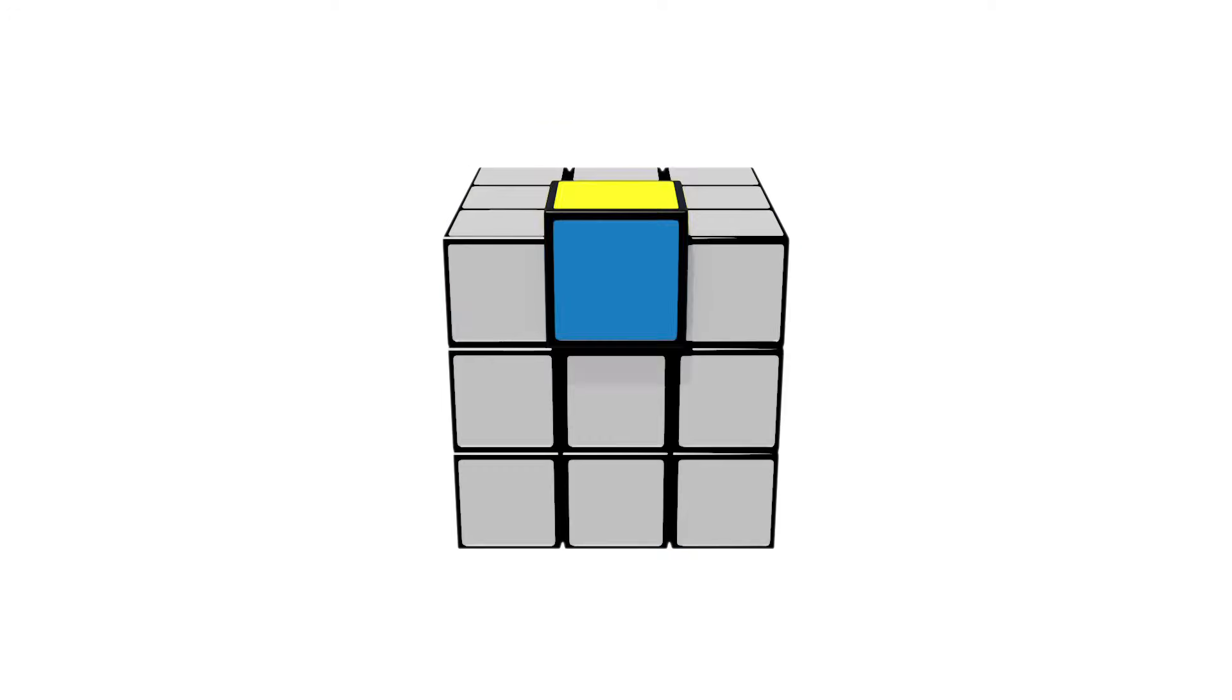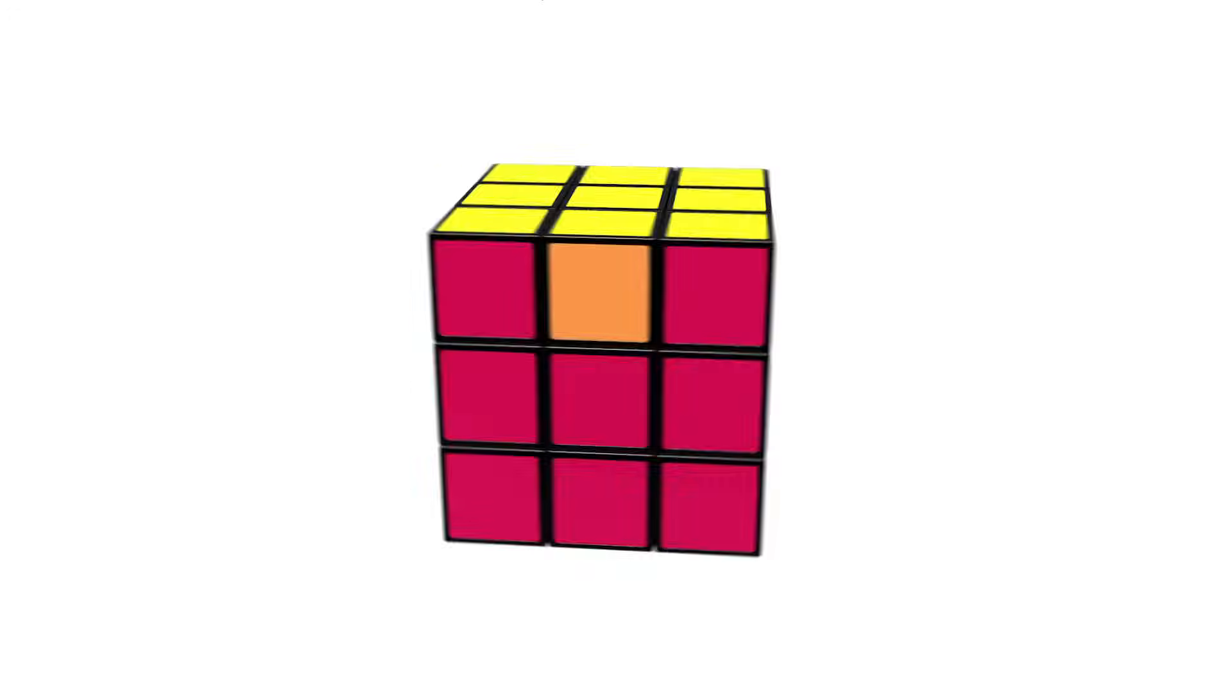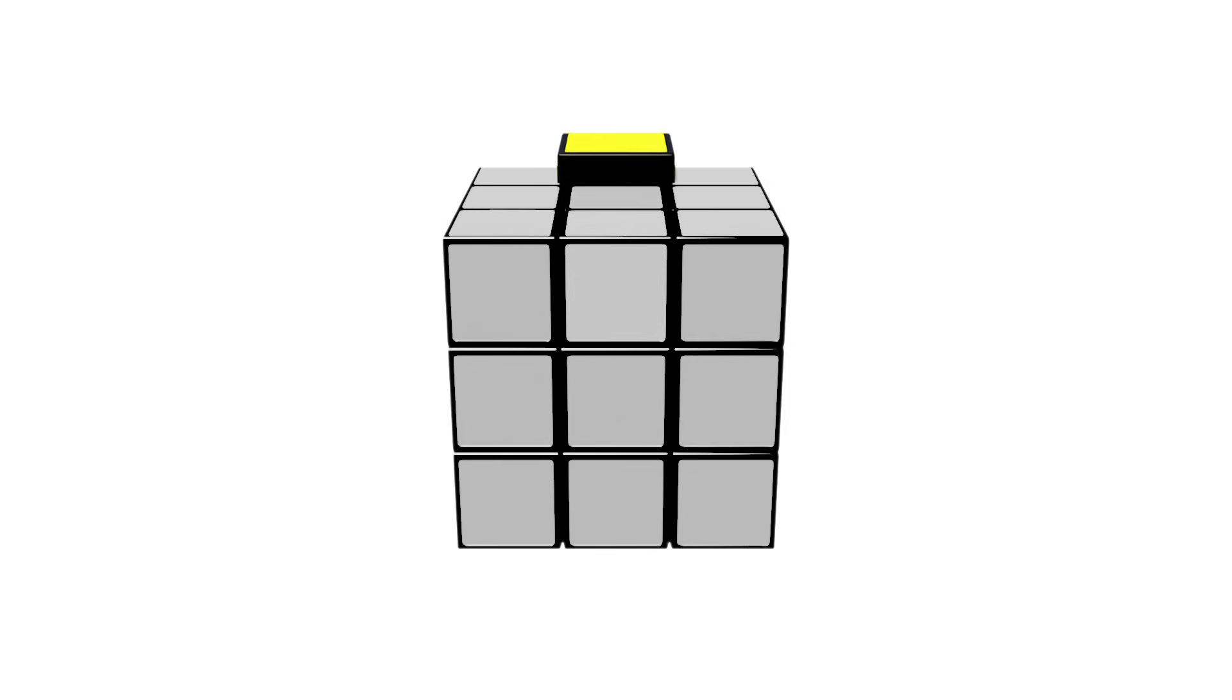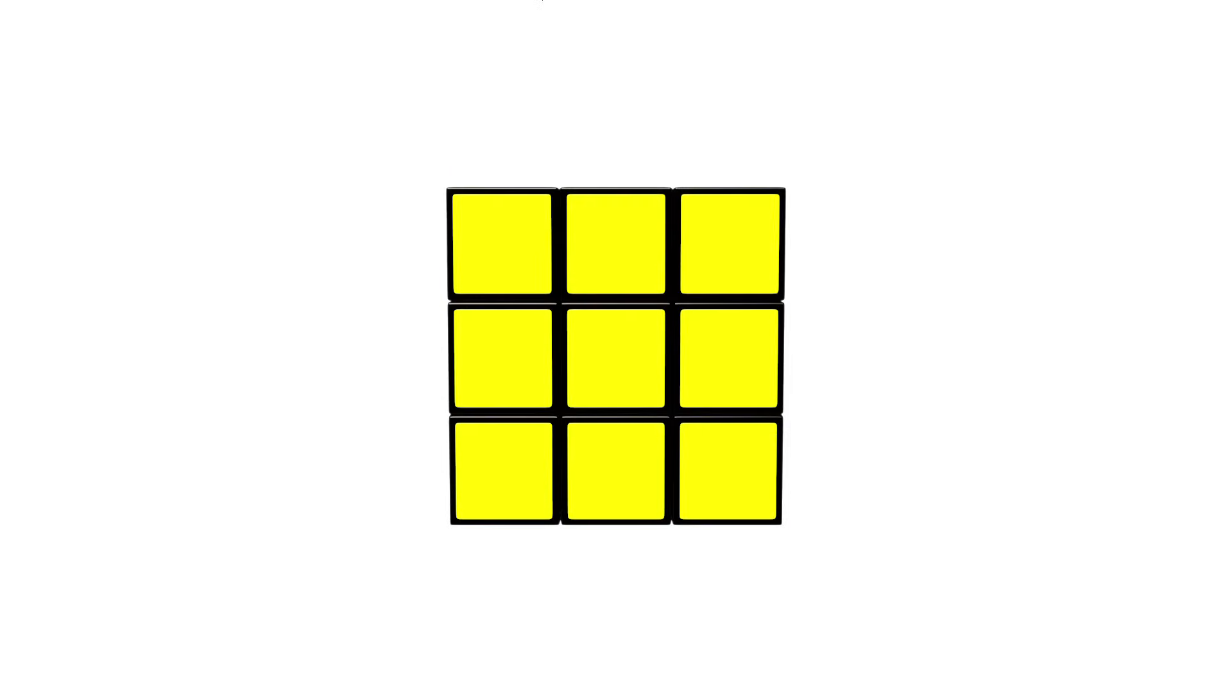If one edge is correct, then orient the cube so that the correct edge is on the back face like this. Now, looking at the yellow face, work out if you need it to move clockwise like this or counterclockwise like this.